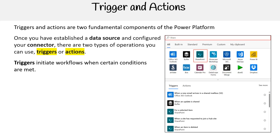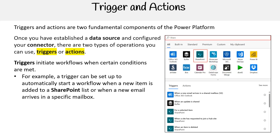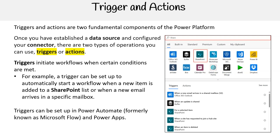Triggers initiate workflows when certain conditions are met. For example, a trigger can be set up to automatically start a workflow when a new item is added to a SharePoint list or when a new email arrives in a specific mailbox. Triggers can be set up in Power Automate, formerly known as Microsoft Flow, and in Power Apps.